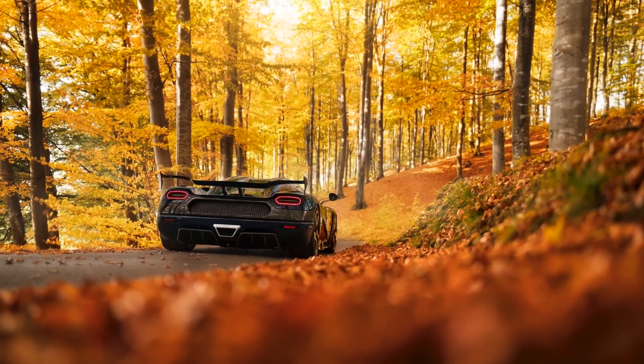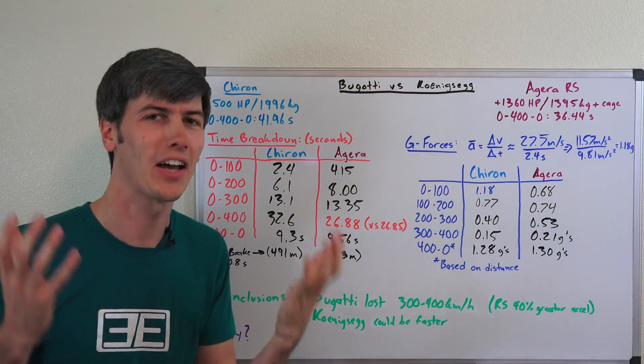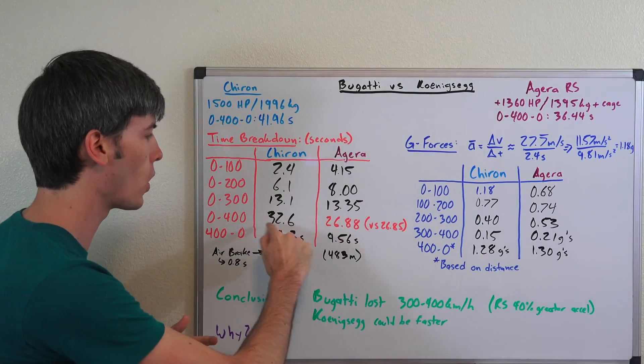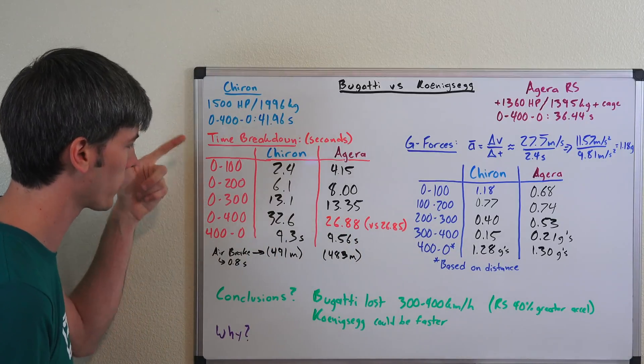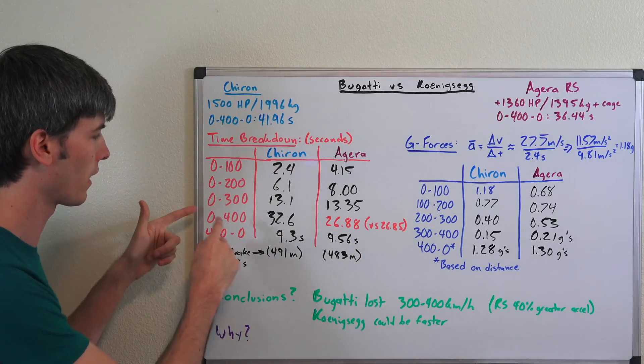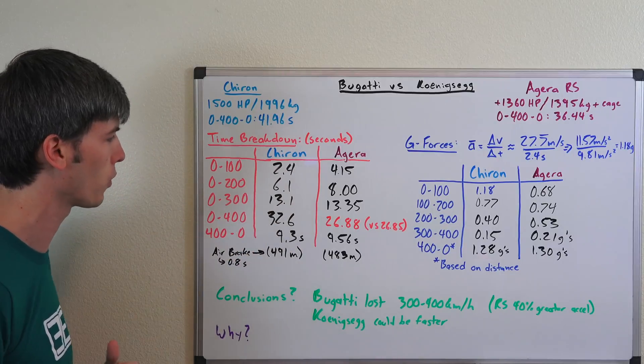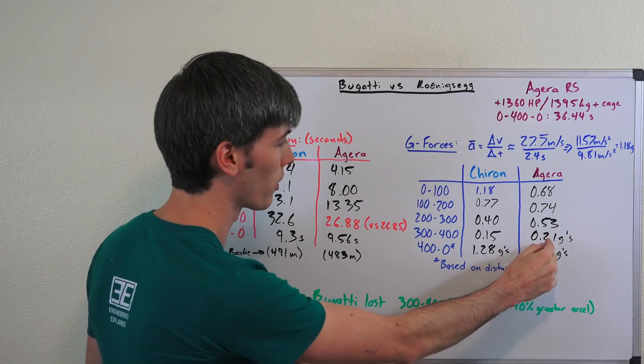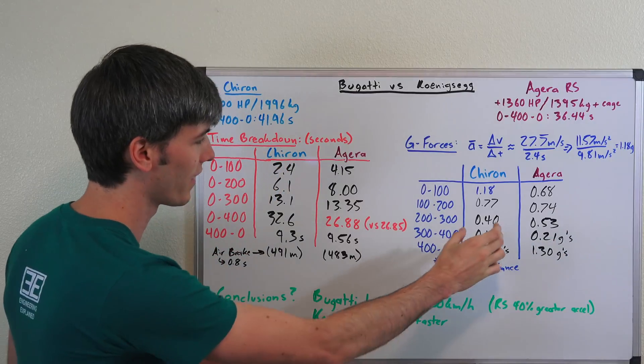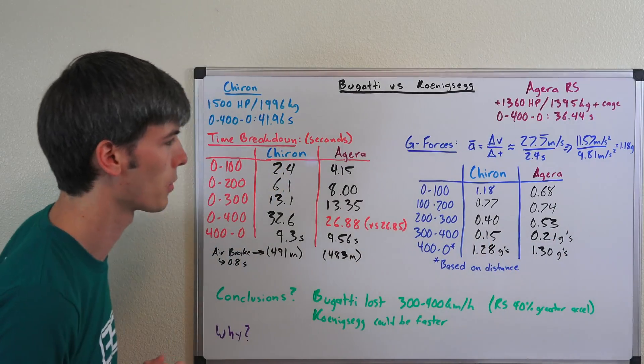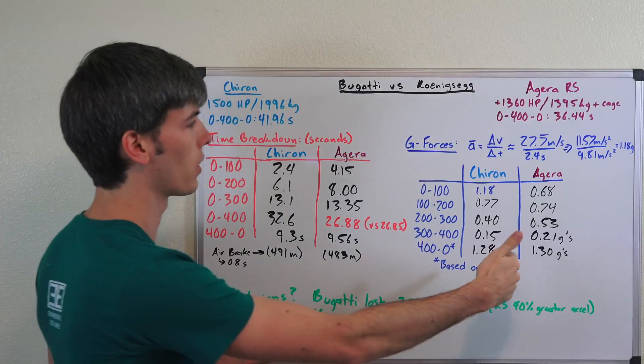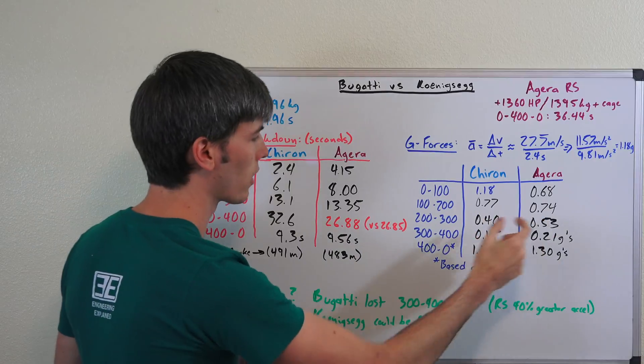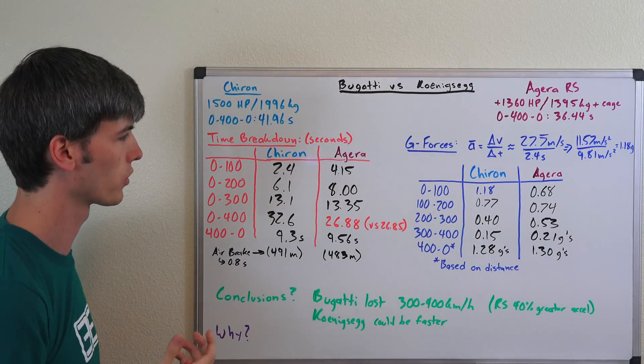So what have we learned? What are our conclusions? Well basically this entire race was won and lost between 300 and 400 kilometers per hour. That's where all of the time was spent. Bugatti was actually quicker for the whole race up to 300 kilometers per hour. And then it lost it from that final leg of 300 to 400 and that's where it spent so much time accelerating. The Agera was actually accelerating with 40% more g's than the Chiron on average from 300 to 400 kilometers per hour. That's where it was able to make up all its ground. It didn't have great traction so it wasn't that quick from 0 to 300, but it made up all of that ground in the 300 to 400 segment and that's why it was able to win the race.